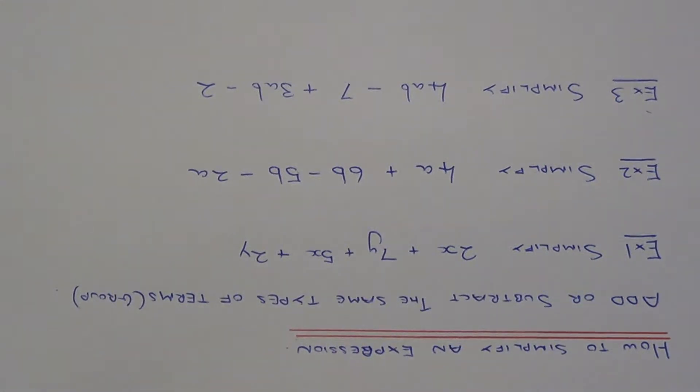To simplify mathematical expressions, you need to add or take the same types of terms in the expression. A term is basically a group of algebra, so that means you need to add the x's to the x's, the y's to the y's, and z's to the z's, etc.